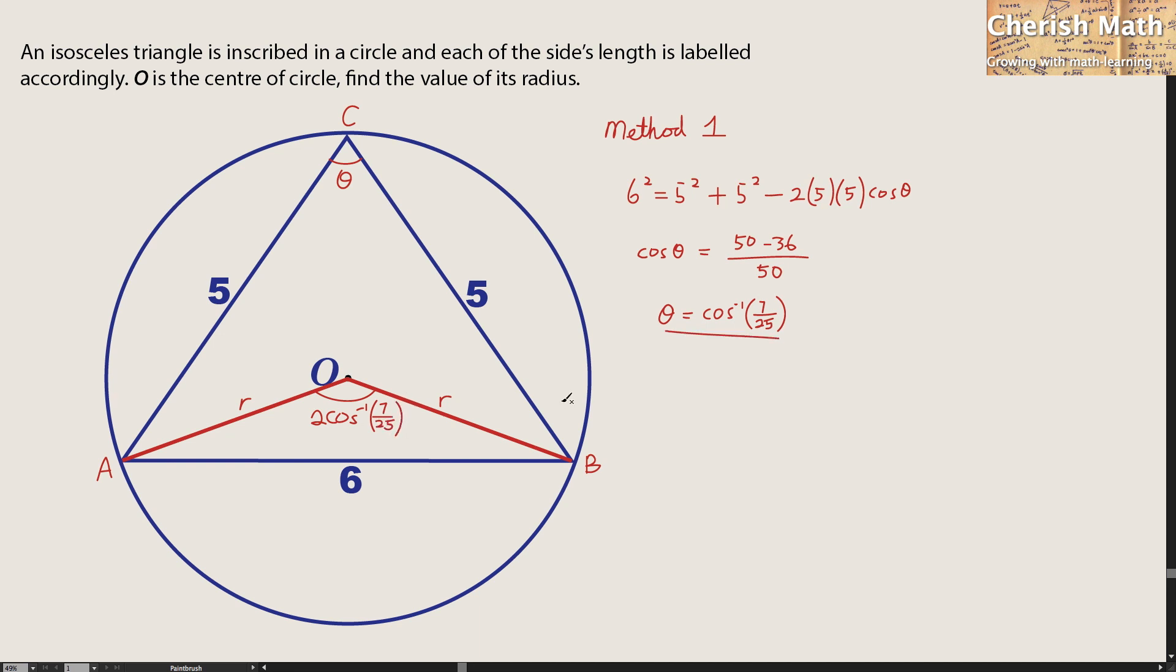In the next step, I'm going to solve for the value of R by using the cosine rule again. And that's referring to the triangle of AOB now. I'm going to use the cosine rule here. That turns 6 squared is equal to R squared plus R squared minus 2 times R times R again